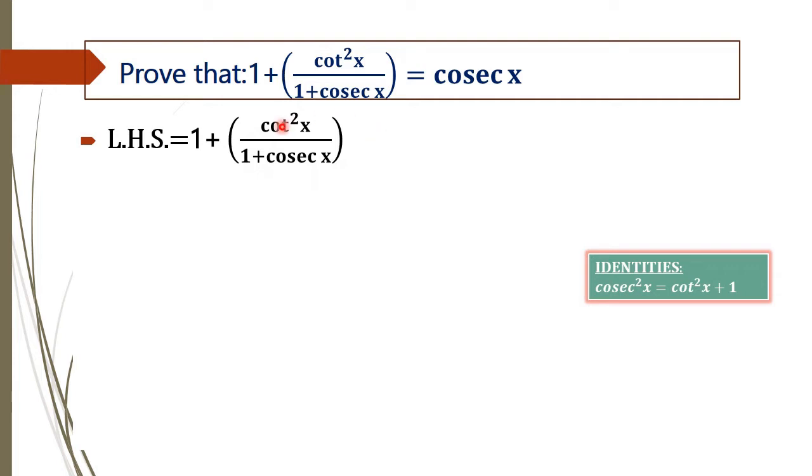This is our left-hand side of this equation: 1 plus cot squared x divided by 1 plus cosec x, and we have to reach cosec x. That means the right-hand side has only cosec x—there is no cot squared x on the right-hand side of this equation.